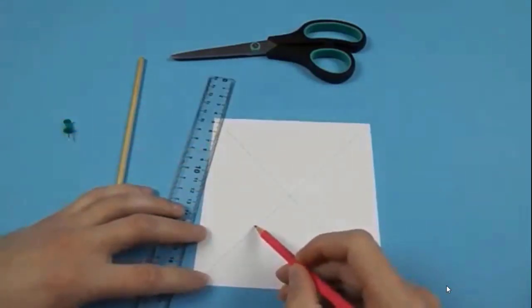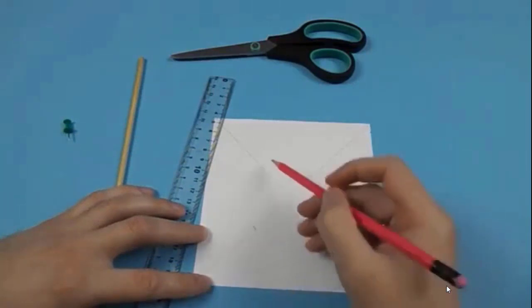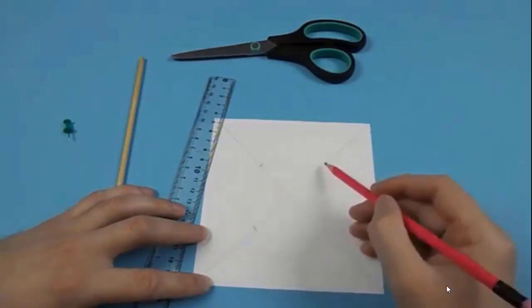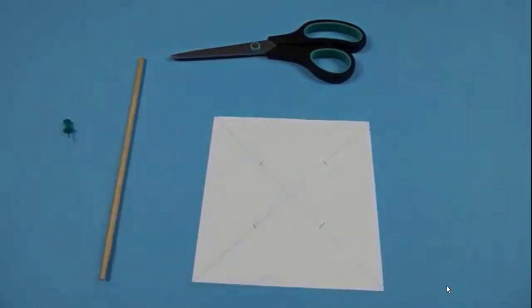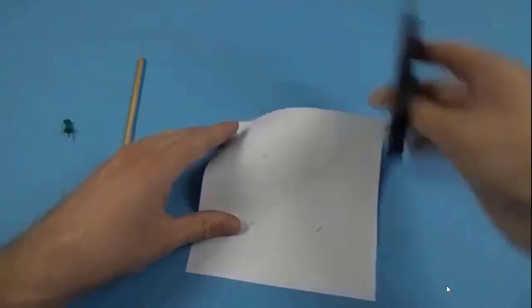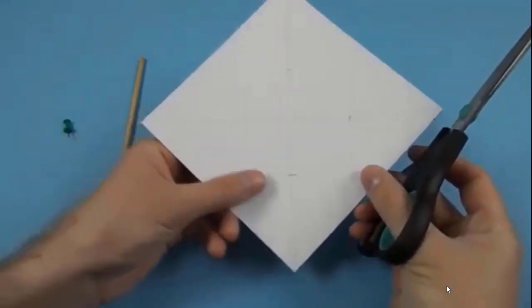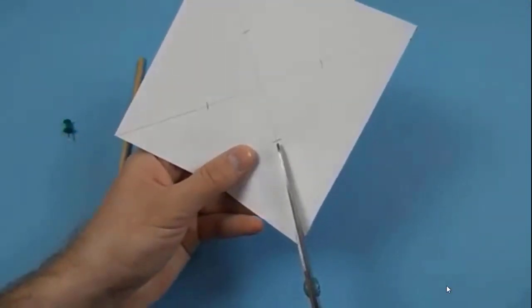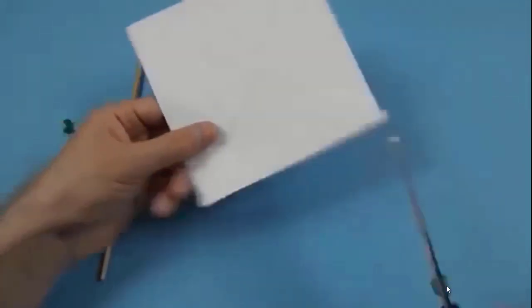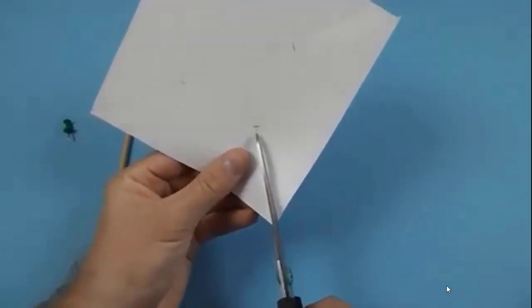Now up to half of the line, put pencil mark on all four sides. Take scissor and cut the paper up to that pencil mark.